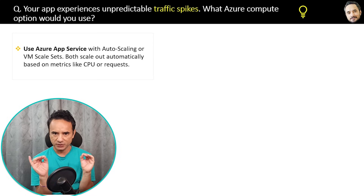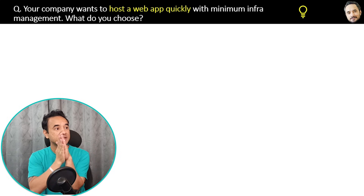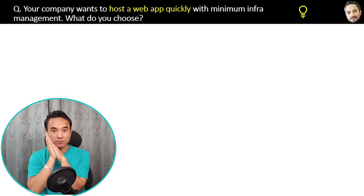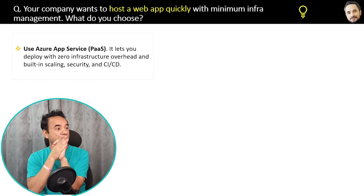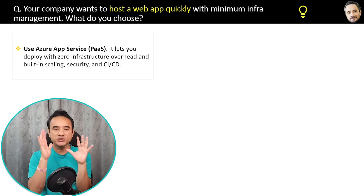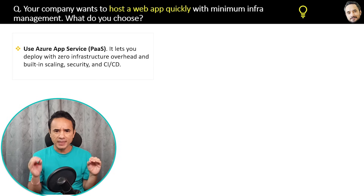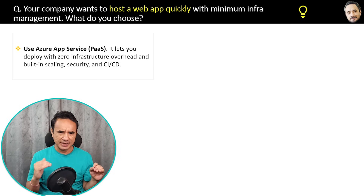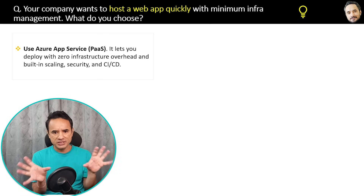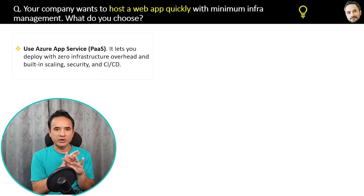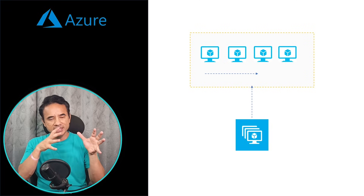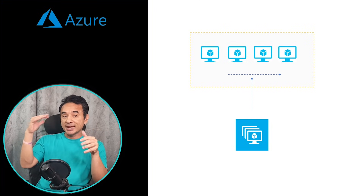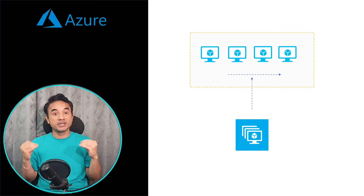Another scenario: your company wants to host a web app quickly with minimum infrastructure management — what do you choose? Pause and think. The answer is Azure App Service. It is PaaS, so you deploy with zero infrastructure overhead, and built-in scaling, security, and CI/CD are all included. You only manage your application code and it goes live. There is also one better alternative to Virtual Machines that is commonly used in Azure.